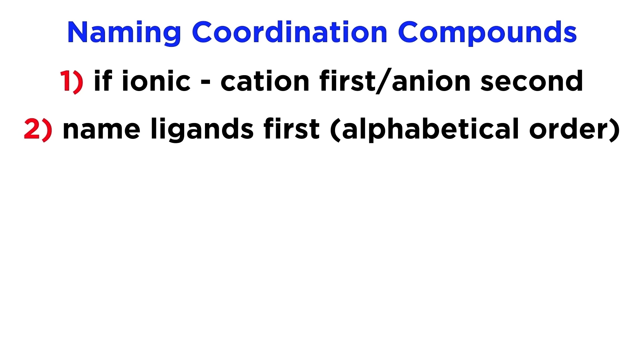Second, we will always name the ligands first, and we will do so in alphabetical order. Once these have all been named, then we will name the central metal atom. So what are the names of these ligands? Well, for neutral ligands, it's easy. These will just be the normal name of the molecule that is acting as a ligand.